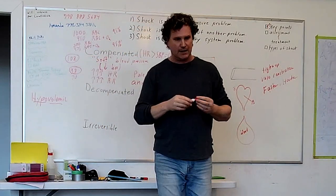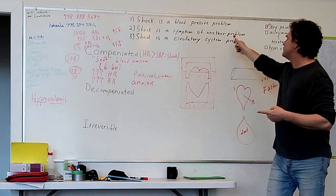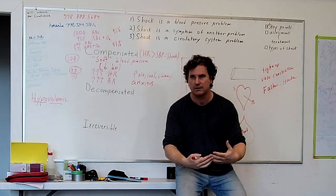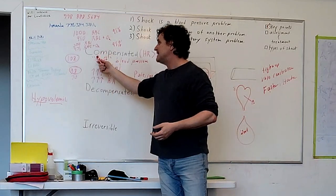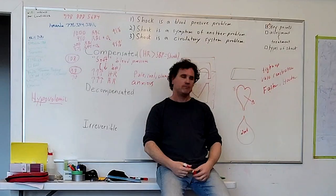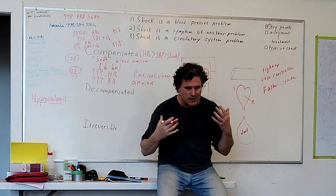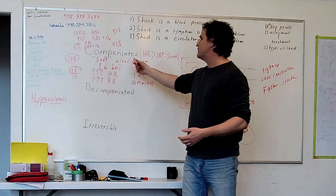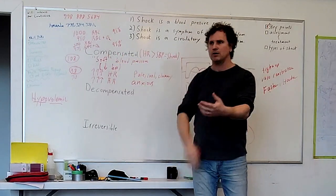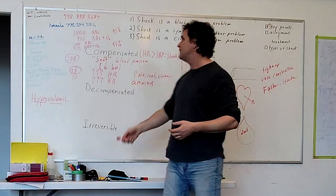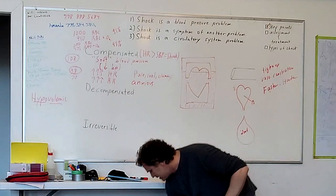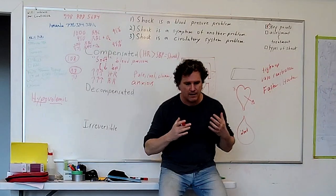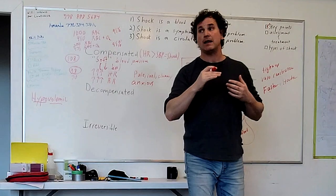The problem with compensated shock: if the underlying problem hasn't been solved, it gets harder and harder to compensate. Eventually the body just gives up, because compensation takes energy — and energy is delivered in the blood, which is increasingly difficult to deliver. Eventually this is going to fail. Even if the underlying problem is solved, the person is still in shock and it still takes energy to compensate, and that will eventually run out.